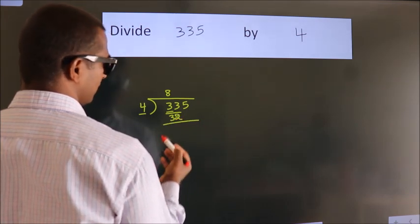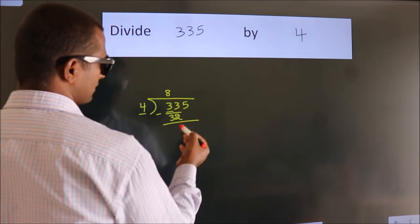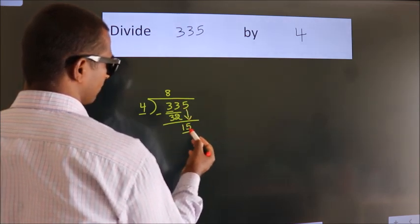Now we should subtract. We get 1. After this, bring down the beside number. So 5 comes down, giving us 15.